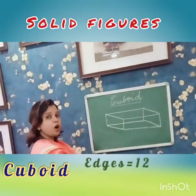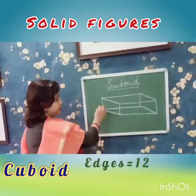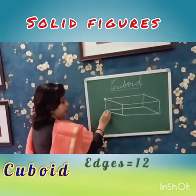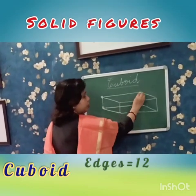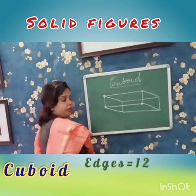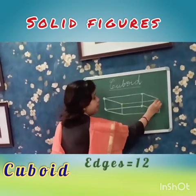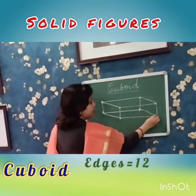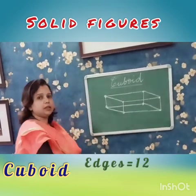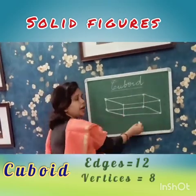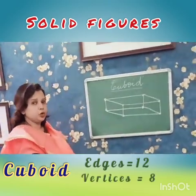How many corners? How many vertices? You can see here 1, 2, 3, 4 in one rectangle, and 5, 6, 7, 8 in the other rectangle. So it has 8 vertices in total.